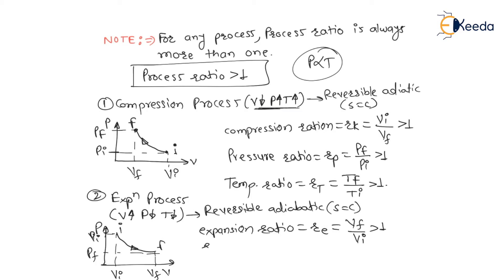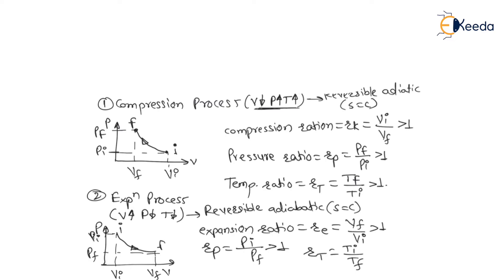For expansion there is also a pressure ratio, where initial pressure is greater than final pressure, and similarly a temperature ratio: initial temperature divided by final temperature. Both compression and expansion are reversible adiabatic processes — also called isentropic processes — meaning entropy is constant.